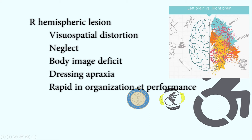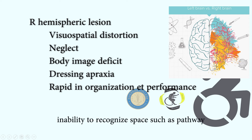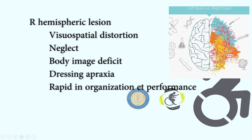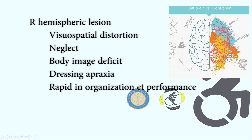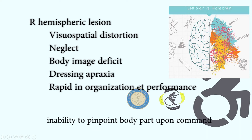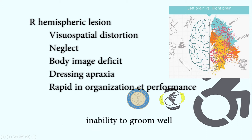Here are the manifestations if the right side of the brain is affected. First is visuospatial distortion. Second is neglect. Third is body image deficit. Fourth is dressing apraxia. And lastly, rapid disorganization in performance.